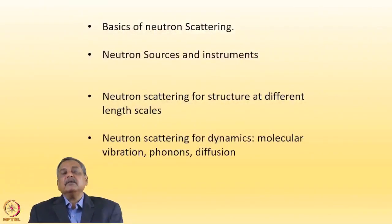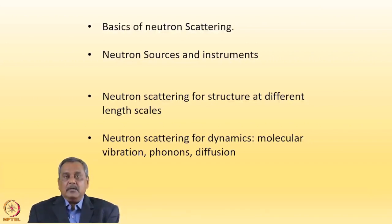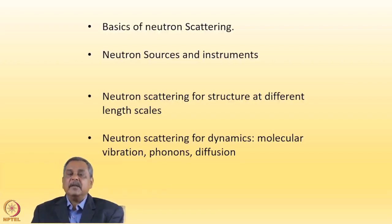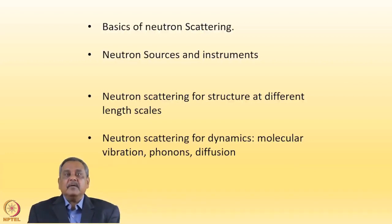It will cover the basics of neutron scattering using Fermi's Golden Rule in reasonable detail. It will also discuss neutron sources and instruments used therein, specifically the major reactor and spallation neutron sources. It will cover neutron scattering for structure at different length scales — this is elastic scattering of neutrons — and neutron scattering for dynamics at various length scales, including molecular vibration, phonons, diffusion, etc.